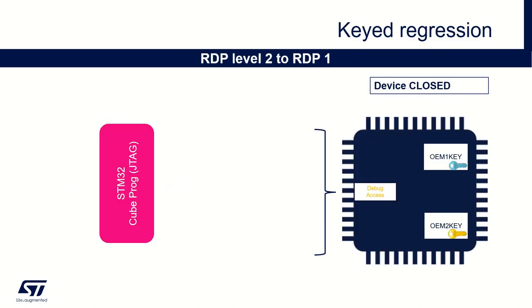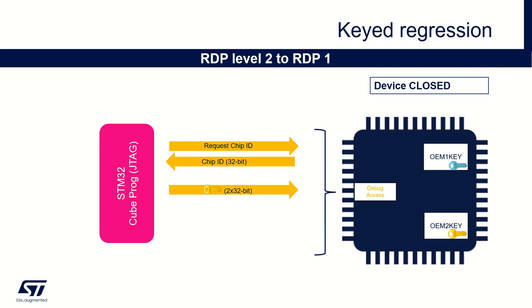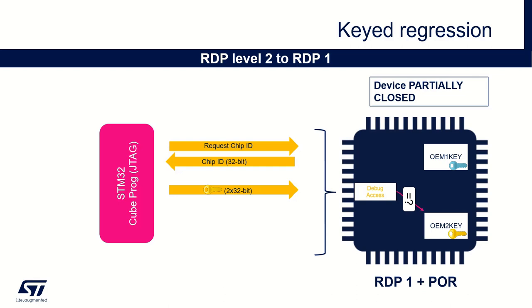Let's imagine you have finished your product development. You have flashed your firmware, provisioned the OEM keys and set the RDP level to level 2 to protect your product as much as possible. You sell your product worldwide and suddenly in the field you have an issue with one device. It's sent to your maintenance services and you need to reopen it. First, you recover the device ID thanks to the JTAG connection. Then, using this value, you recover the OEM2 key value from your internal database. Then you send this value through JTAG. If the key value matches, the RDP regression is automatically done and a power-on reset is needed. If the key value mismatches, you need to do a full power cycle to do a new trial.